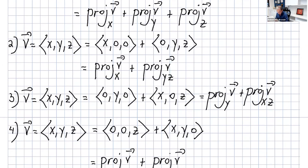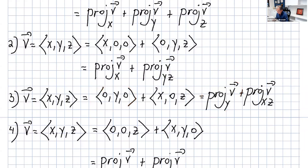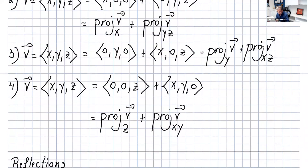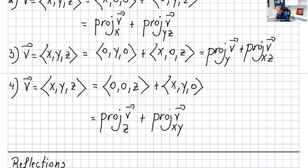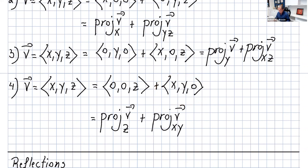We can write v as (0,y,0) + (x,0,z), which is the projection onto the y-axis plus the projection onto the xz plane. Also, v can be written as (x,y,z) = (0,0,z) + (x,y,0), which is the projection onto the z-axis plus the projection onto the xy plane.